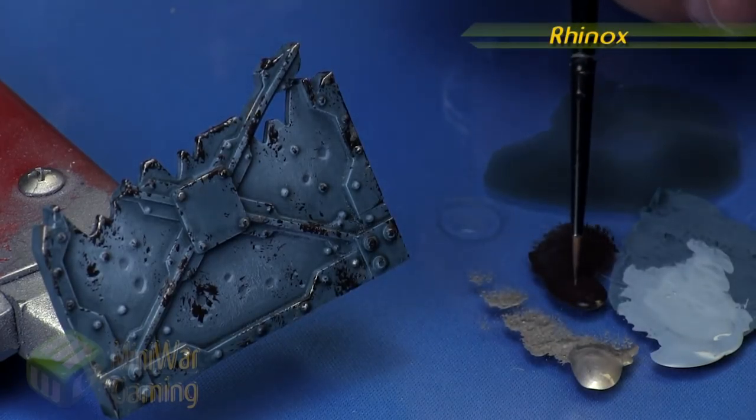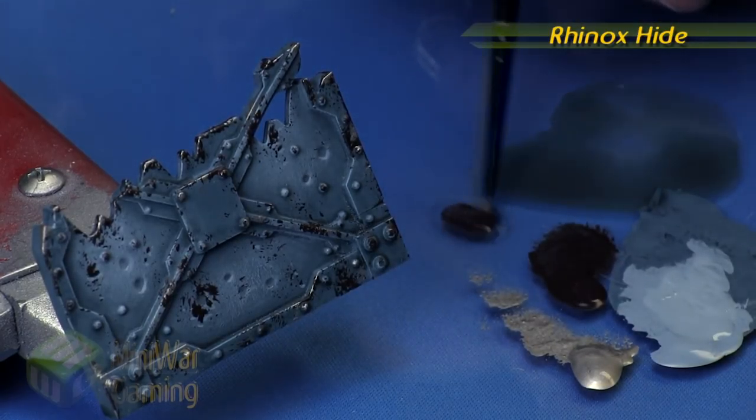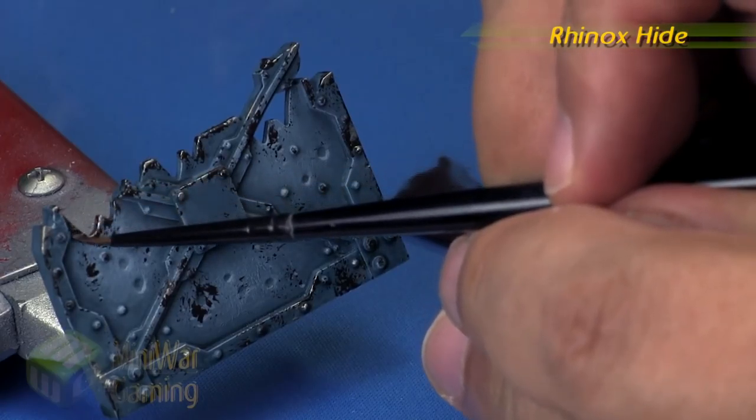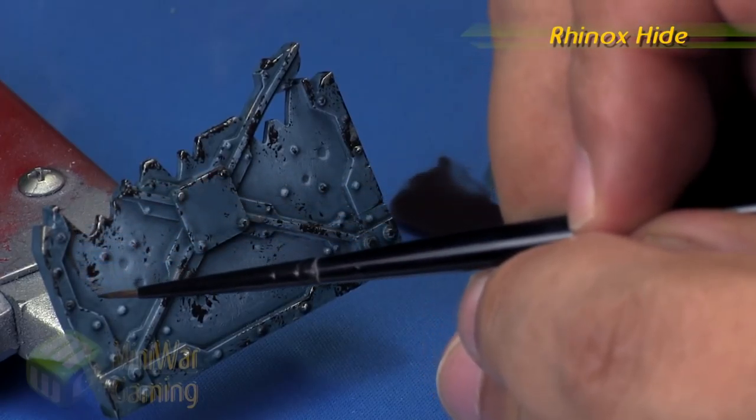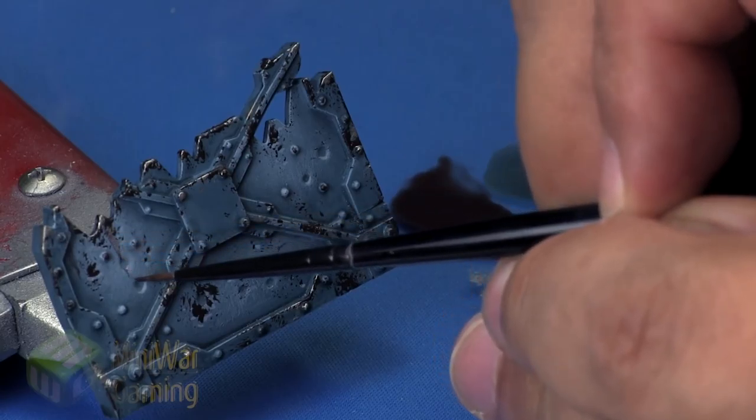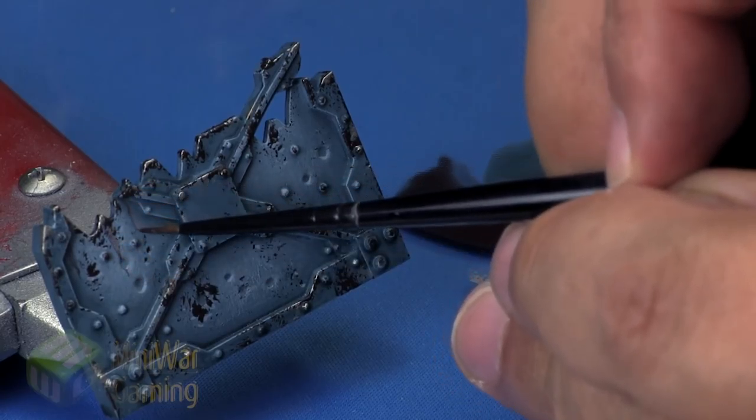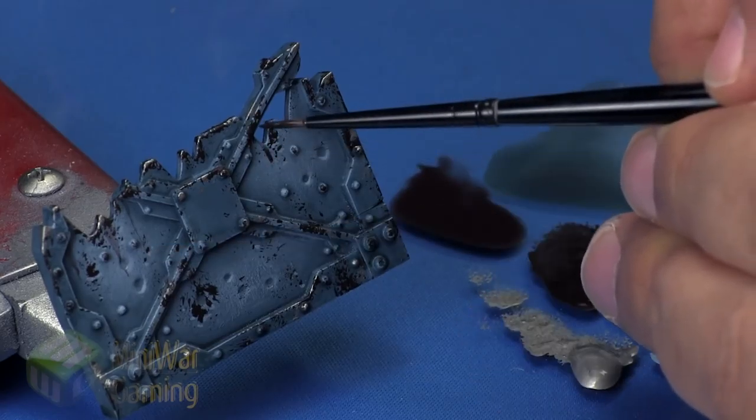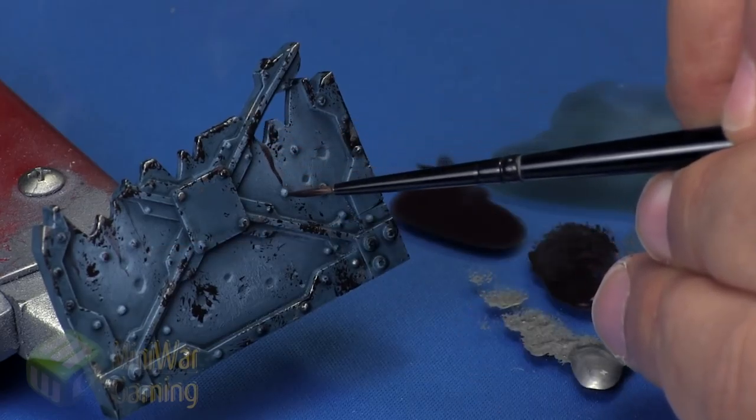Next we're going to take some Lahmian medium onto our palette and take just a little dab of the Rhinox Hide. We're going to create little streaks, those rust streaks. We're using the same brown because it's rusty, it's dark, it's got brown qualities as well as lighter qualities.